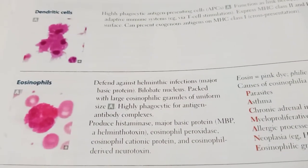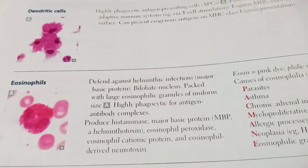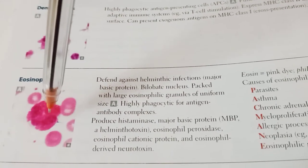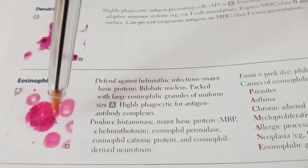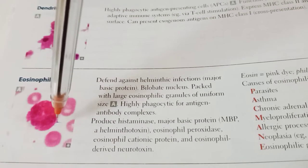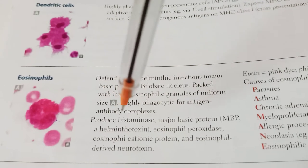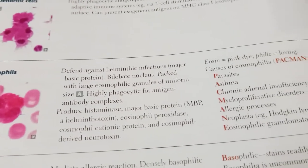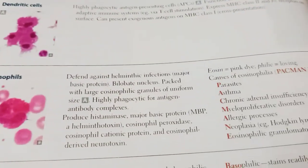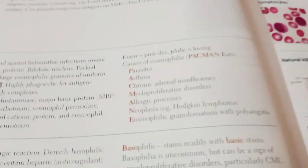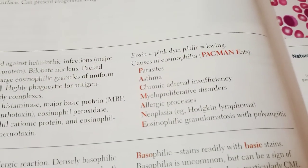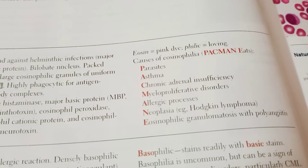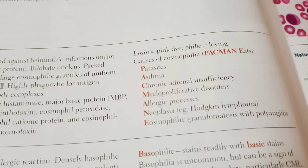Eosinophils defend against helminthic infections. They have a bilobed nucleus and are packed with large eosinophilic granules. They are highly phagocytic for antigen-antibody complexes and produce major basic protein (a helminthotoxin), histaminase, eosinophil peroxidase, eosinophil cationic protein, and eosinophil-derived neurotoxin. Causes of eosinophilia — remembered as 'PACMAN' — include parasites, asthma, chronic adrenal insufficiency, myeloproliferative disorders, allergic processes, neoplasia (e.g., Hodgkin lymphoma), and eosinophilic granulomatosis with polyangiitis.